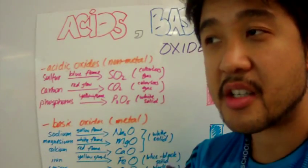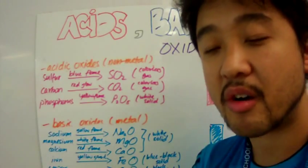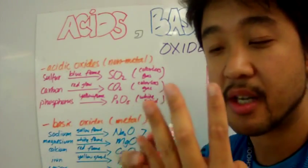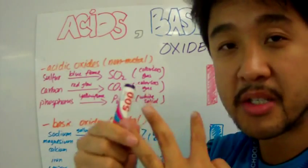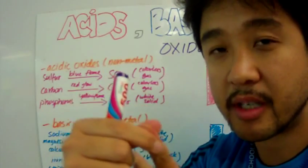We're going to talk about oxides today. Basically, oxides can be categorized into four different types of oxides: acidic oxides, basic oxides, neutral oxides, and amphoteric oxides.